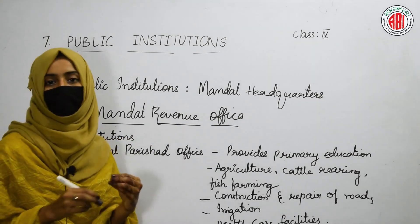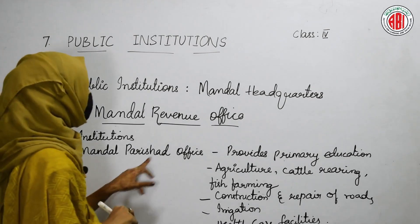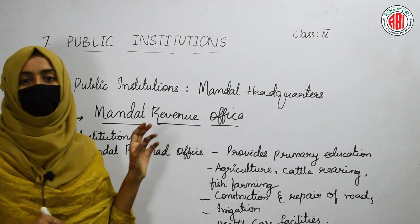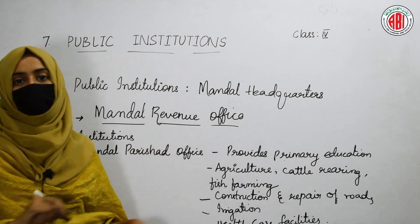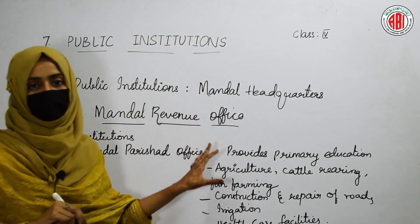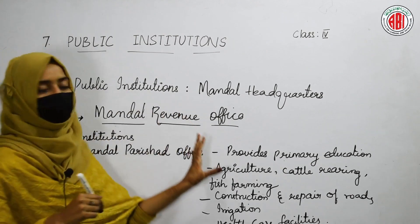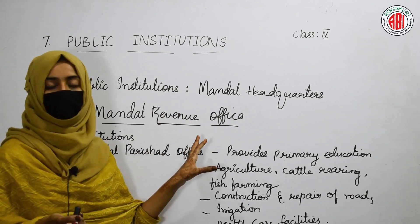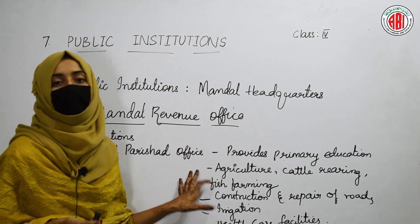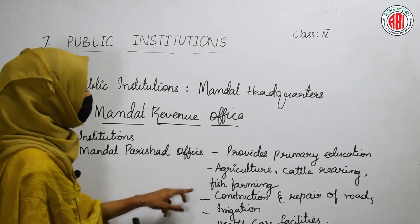Let us look into the institutions and the work carried out by them in the mandal. The first institution is the Mandal Parishad Office. This office is present in the mandal, and its members do work such as providing primary education and working in different fields like agriculture, cattle rearing, and fish farming.